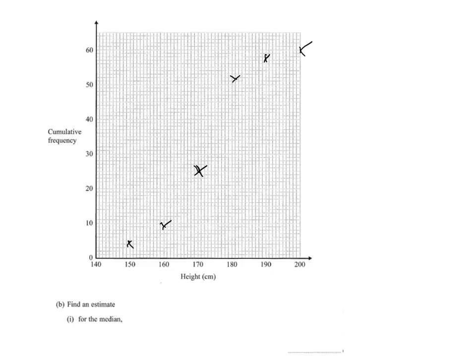So you can see I've plotted the points. So I've got my 150 with 4, my 160 with 9, 170 with 25, 180 with 52, 190 with 57, and 200 with 60. So I now need to draw a smooth curve through the points, which you can see I've done.